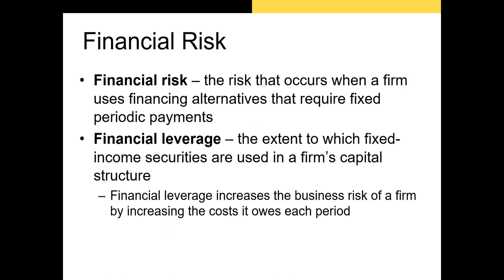The other important risk is financial risk — the risk that occurs when a firm uses financing alternatives requiring fixed periodic payments. We measure it using financial leverage: the extent to which fixed income securities are used in the firm's capital structure. Financial leverage can increase earnings per share through the tax shield, which allows the firm to deduct interest from taxable income. However, highly levered firms with volatile cash flows risk being forced into bankruptcy.